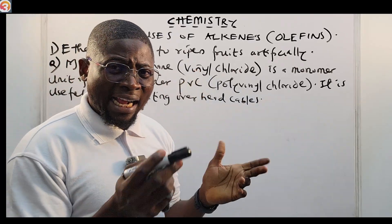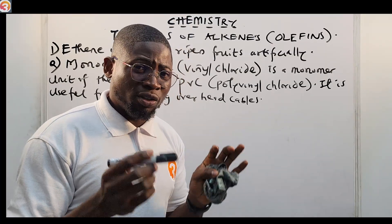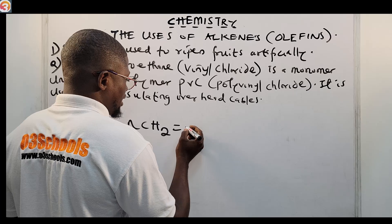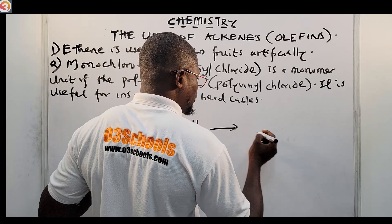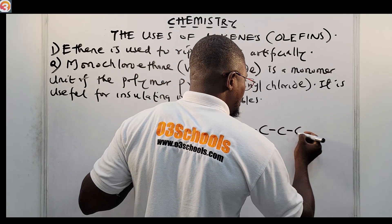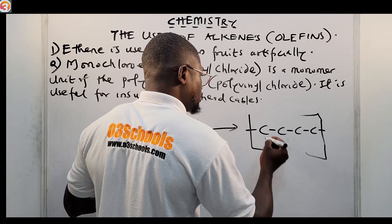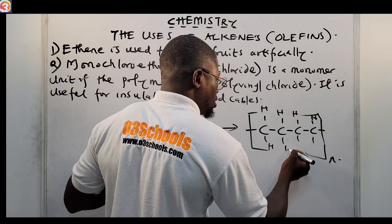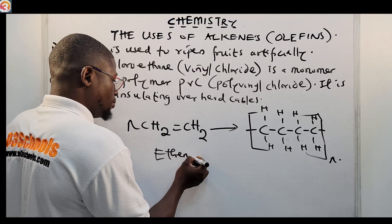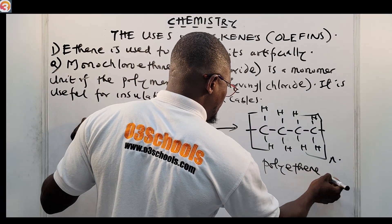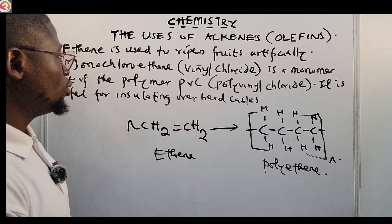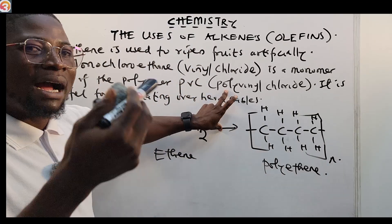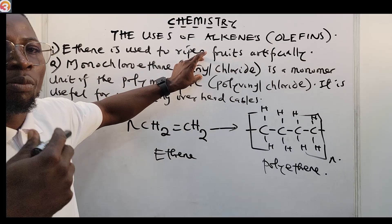Alkenes also undergo polymerization reactions. The general formula is: nCH2=CH2 leads to the formation of polyethene — a chain of repeating CH2 units. So ethene is the monomer unit, and polyethene is the polymer formed from it. This is the general polymerization reaction.